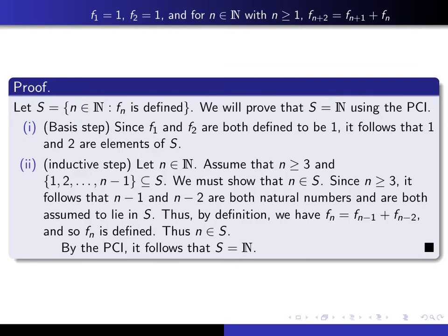Now we pass to the inductive step. So the first thing we do is we give ourself a natural number, little n. Now remember what I warned you about in the previous video. When you're writing a proof using the PCI, you should always indicate what is the smallest value of n for which you have not yet verified that it lies in the set S.